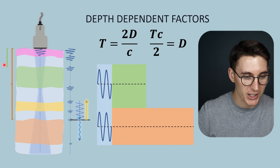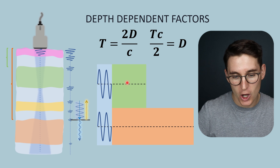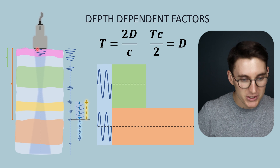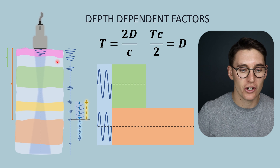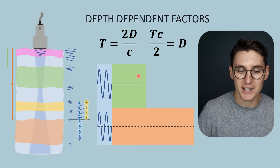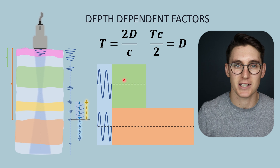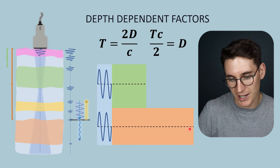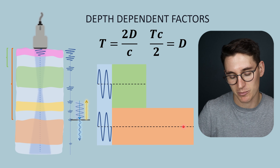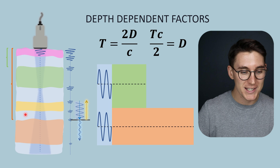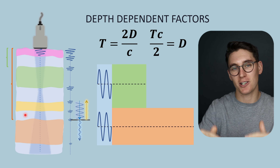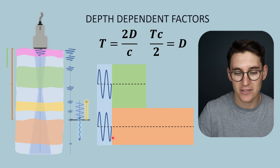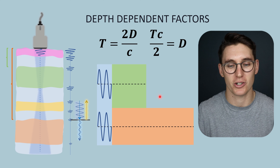If we want to image superficial structures we can reduce our receive time — the amount of time it takes for those echoes to return is very short and we don't need a long listening time. The deeper we want to image within our tissue, the longer our receive time needs to be. So when we set the depth on our ultrasound machine we are changing the receive time in our pulse echo ultrasonography.